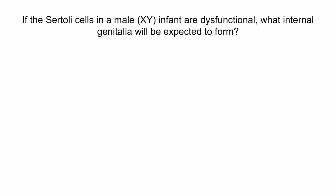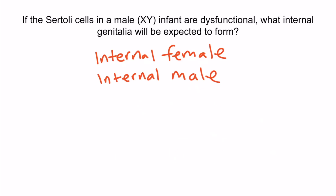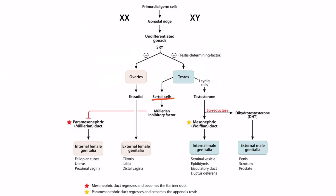Now let's review with a question. If the Sertoli cells in a male infant are dysfunctional, what internal genitalia will be expected to form? Recall that Sertoli cells produce Müllerian inhibitory factor, which normally results in degeneration of the paramesonephric duct. However, if this is absent, then both the paramesonephric duct and the mesonephric duct will form. Therefore, this male patient will have both internal female and internal male genitalia. The Sertoli cells normally produce Müllerian inhibitory factor causing degeneration of the paramesonephric duct, so without it the paramesonephric duct won't degenerate, and this male will end up developing internal female genitalia along with internal male genitalia.